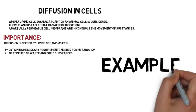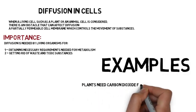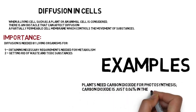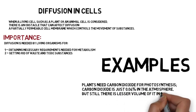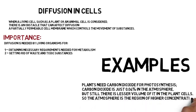Examples. Plants need carbon dioxide for photosynthesis. Carbon dioxide is just 0.04% in the atmosphere but still there is a lesser volume of it in the plant cells. So the atmosphere is the region of higher concentration and the leaves are the region of lower concentration.